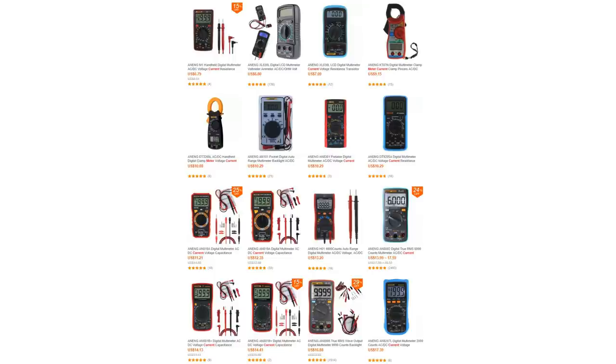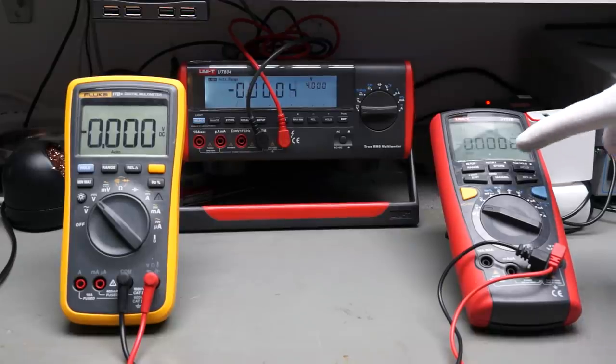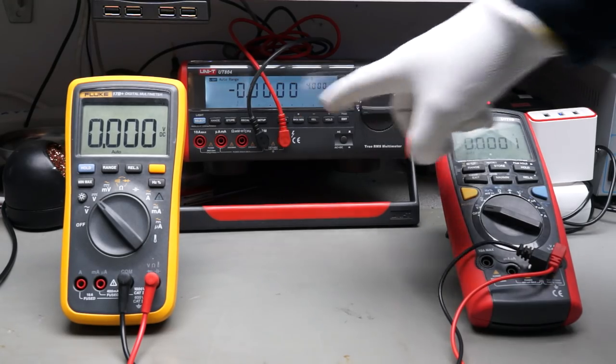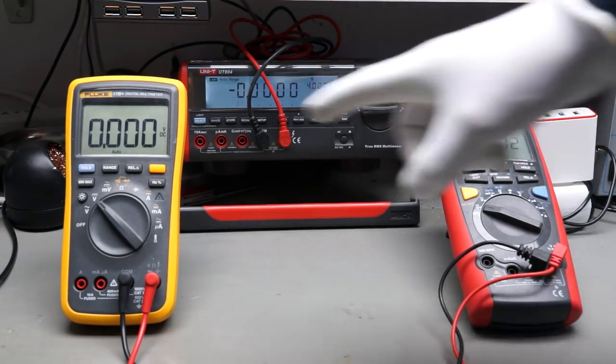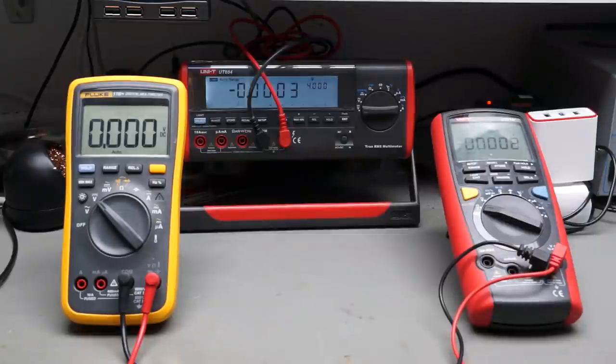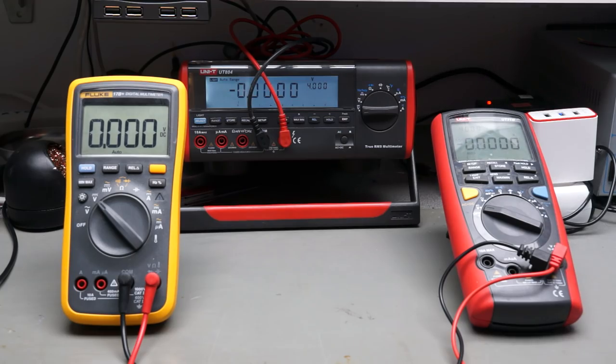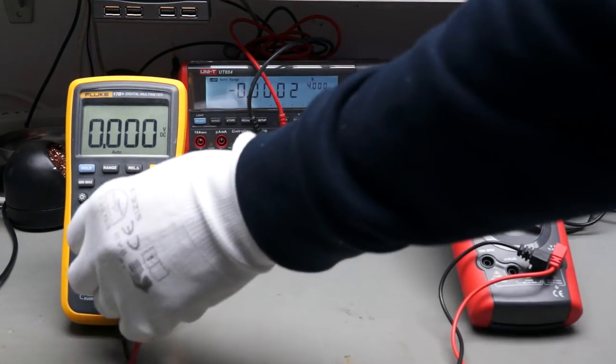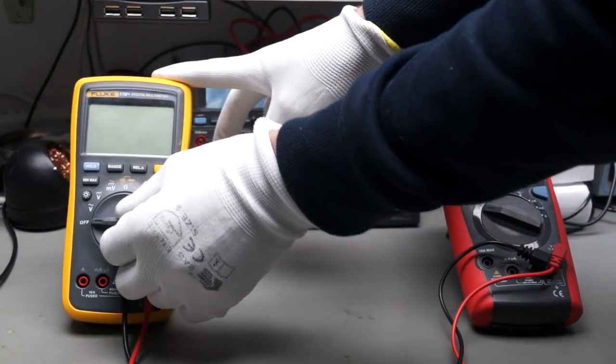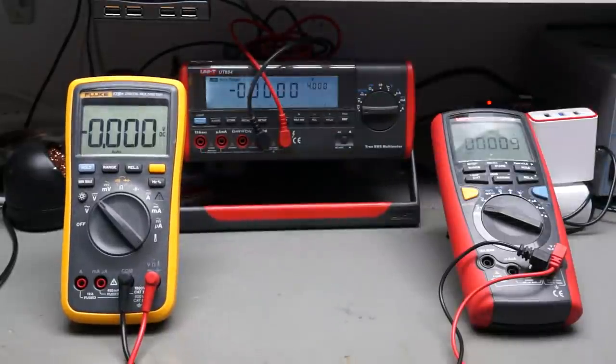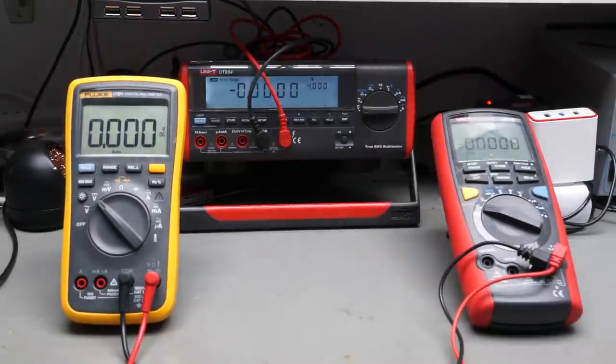One difference is significant: do you want to have a portable or a bench multimeter? Because portable meters run on batteries, they have an auto-switch-off function. Some of them can be switched on by a button, but some can only be switched on by turning the main knob to off and on again. Not very comfortable. Bench power supplies are always on, but usually more expensive.